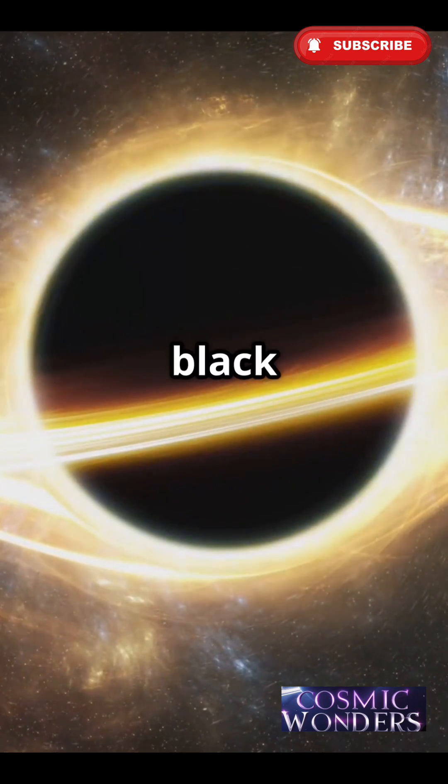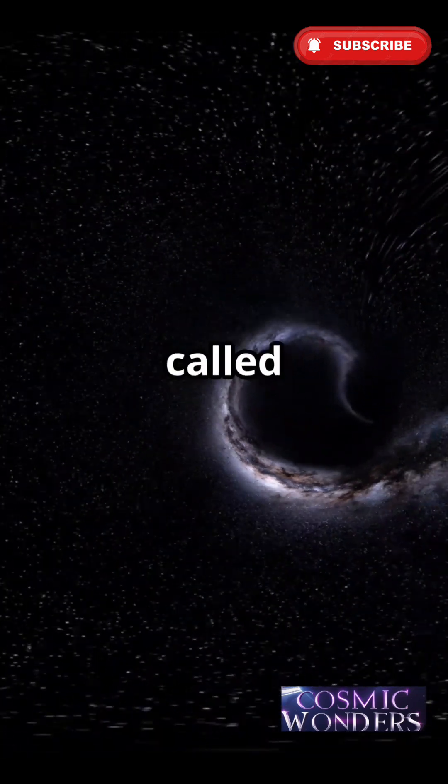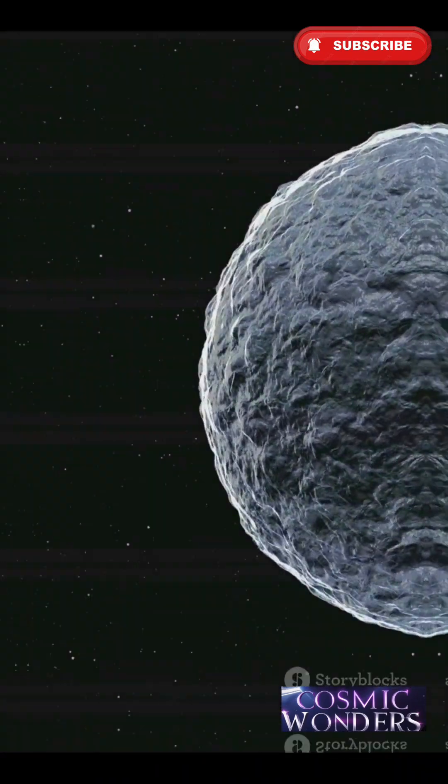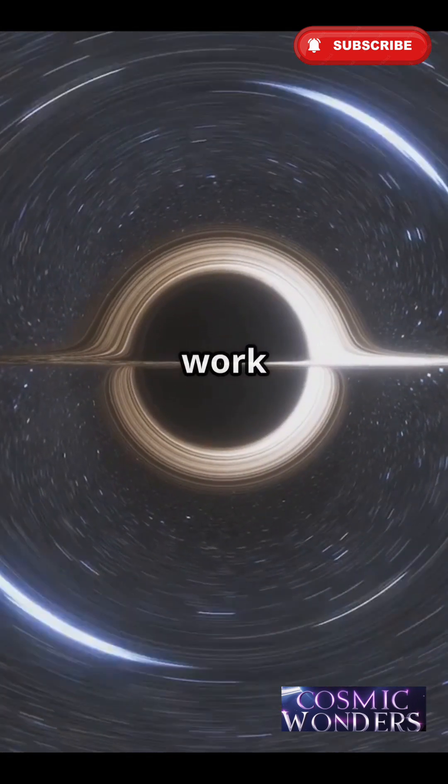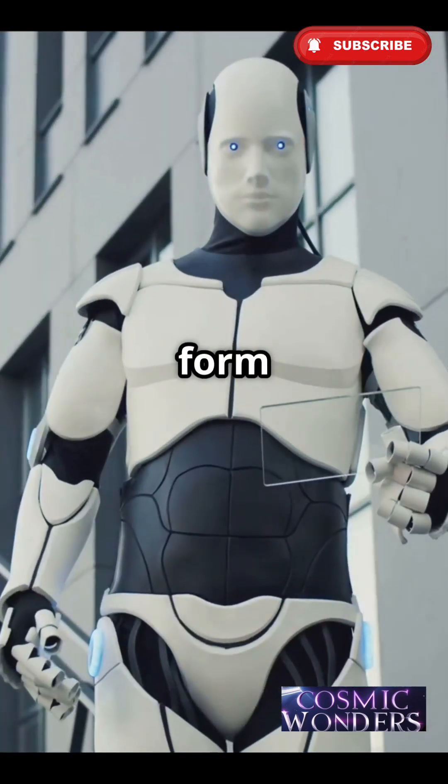Time slows around a black hole - that's real physics. It's called gravitational time dilation. That water planet? It's scientifically possible. Tides and gravity work differently near a black hole. TARS the robot, its form...